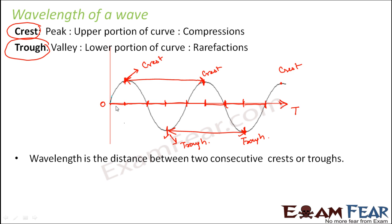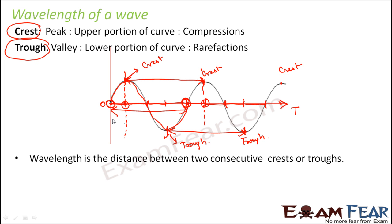In simple words, you can also say that this distance — starting from this point till this point — is one wavelength. If you shift the measurement, you can also say that this entire length is one wavelength. It is up to you how you want to measure one wavelength. Whenever you talk about a wave, either the distance between two crests, or between two troughs, or just one wave — the distance from the beginning of one wave to the beginning of the next wave — that is one wavelength.